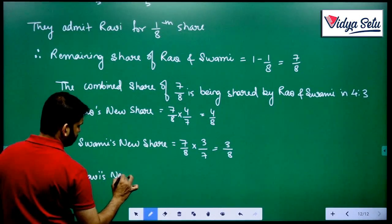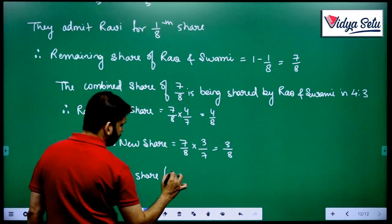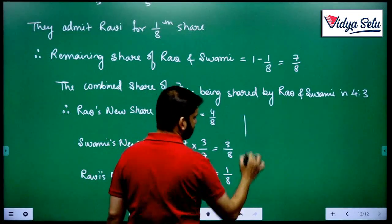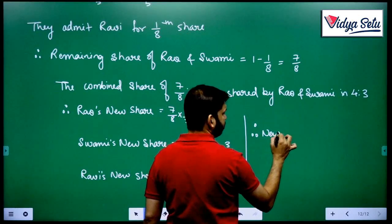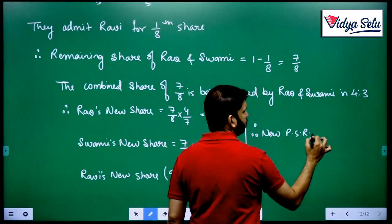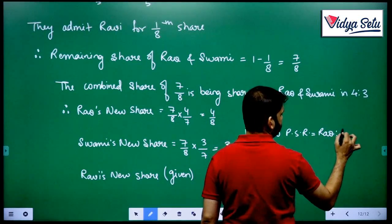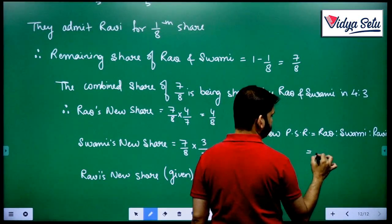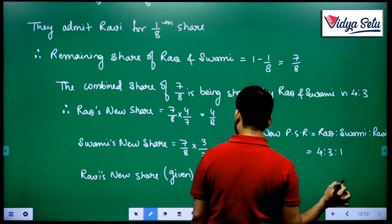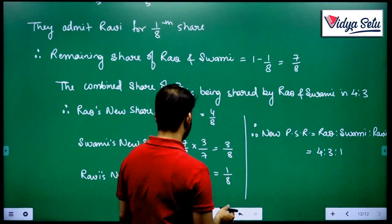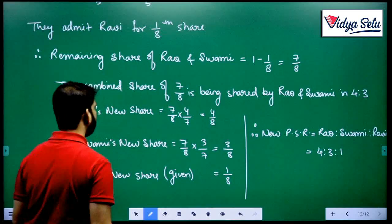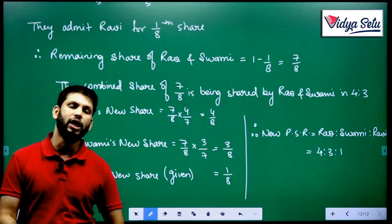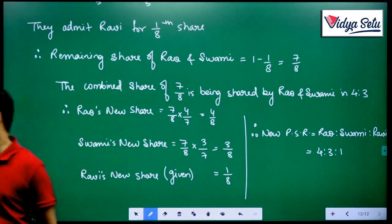Swami's new share equals 7 by 8 multiplied by 3 by 7 equals 3 by 8. And Ravi's new share which is already given is 1 by 8. Therefore the new profit sharing ratio amongst Rao, Swami and Ravi equals 4 is to 3 is to 1. So here we are done with question number 12. Thank you, we will start with question number 13 in our next video.